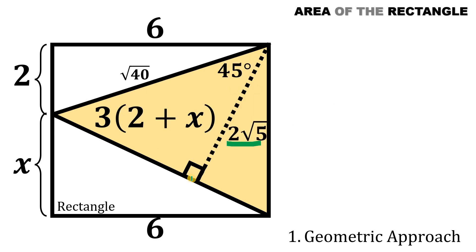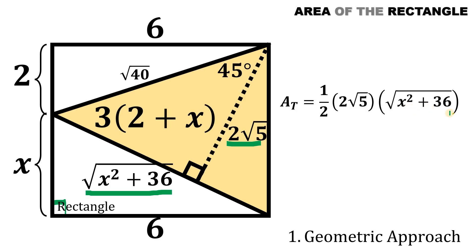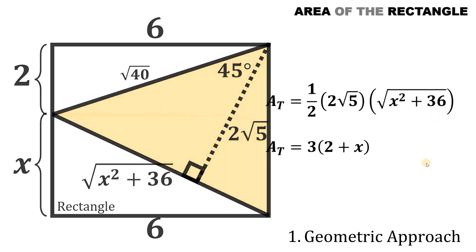What we need now is the base. Using the Pythagorean theorem in this right triangle, we get this hypotenuse equal to the square root of (x² + 36), or 6 squared, and this serves as the base of our triangle. So we can rewrite the area of this triangle as one-half times base times height, or one-half times √(x² + 36) times 2√5. We know the area of this triangle also equals 3(2 + x).